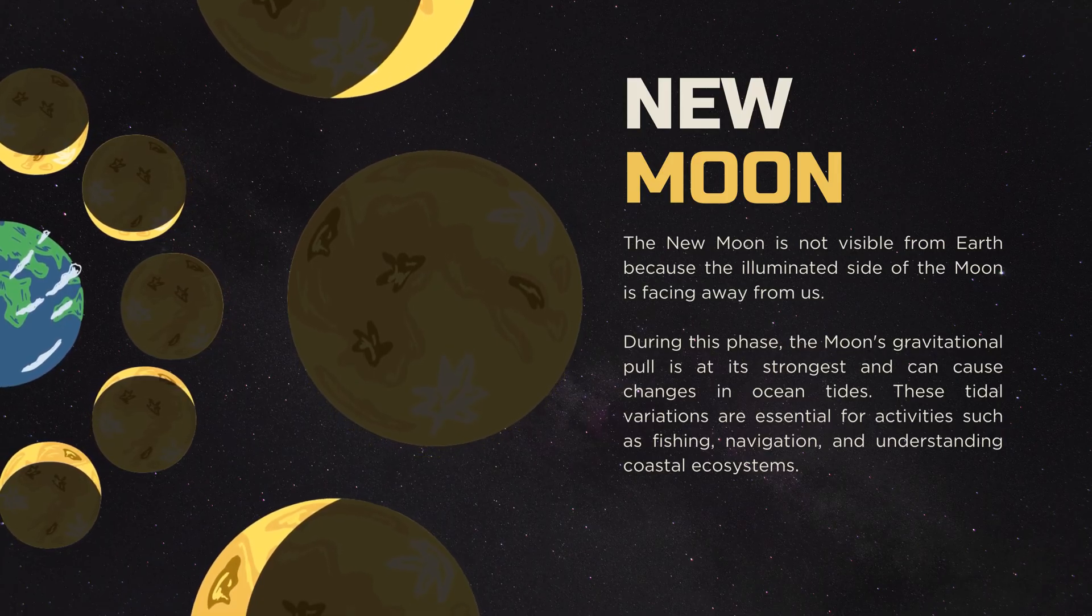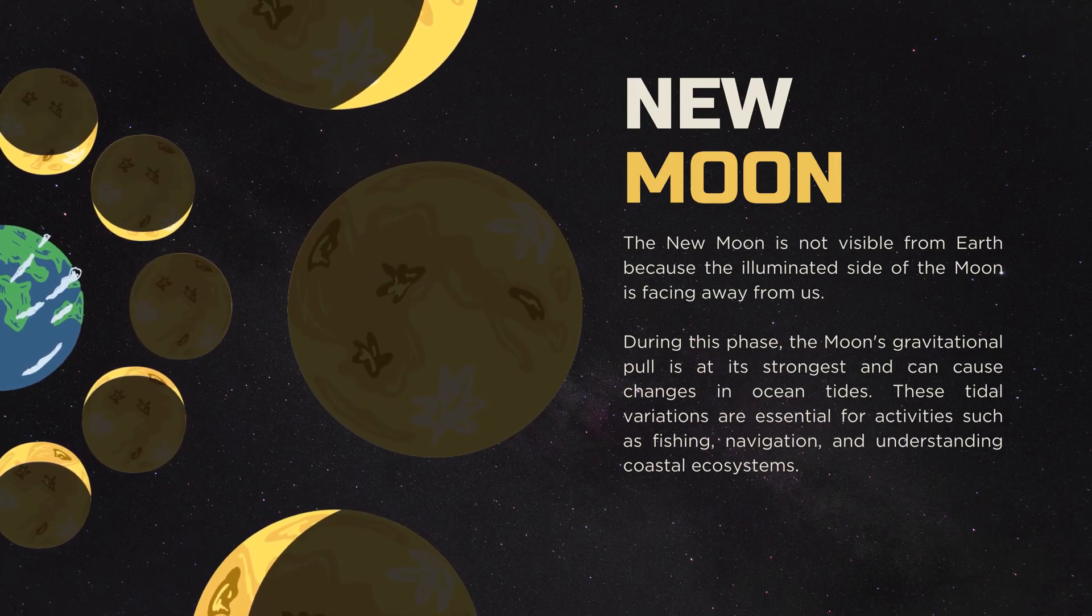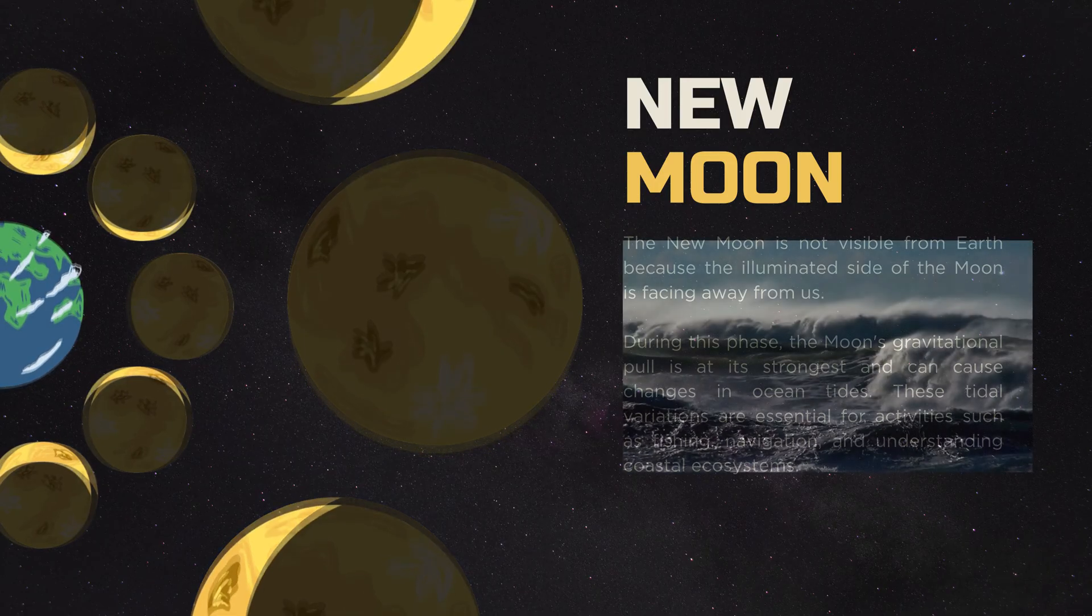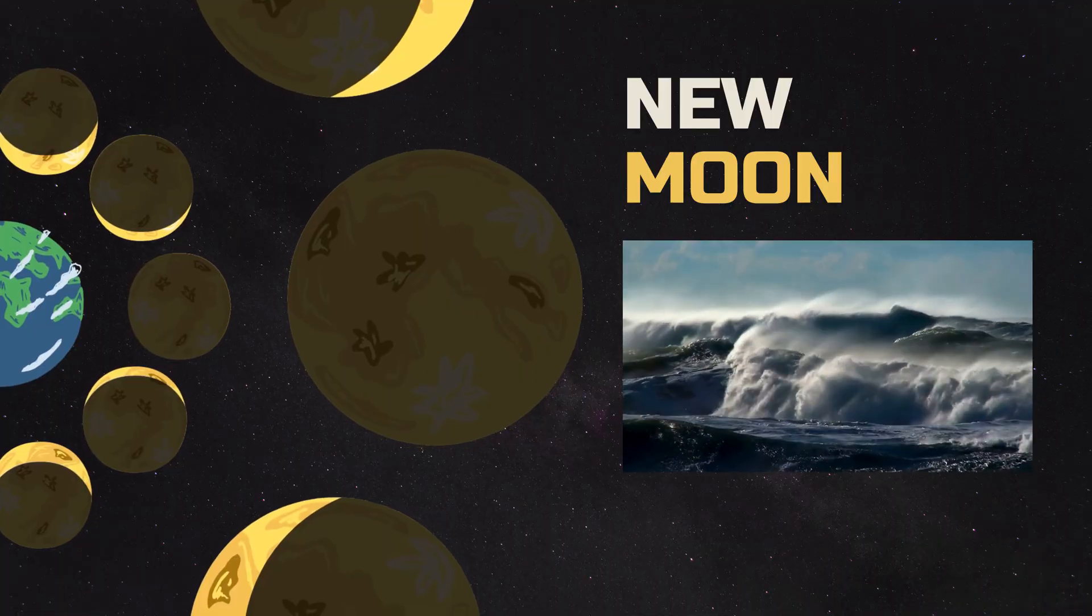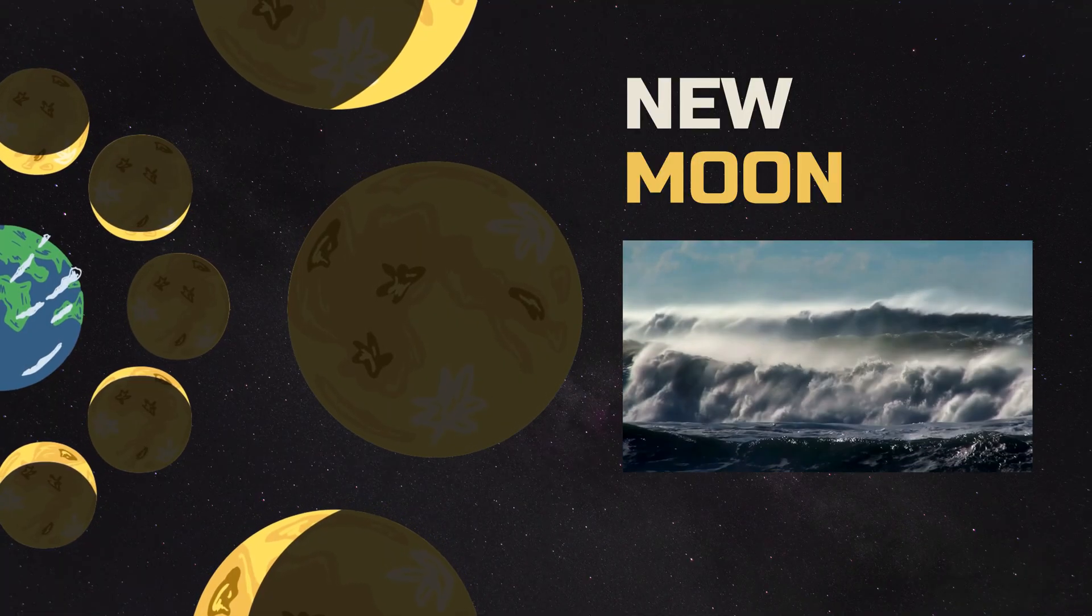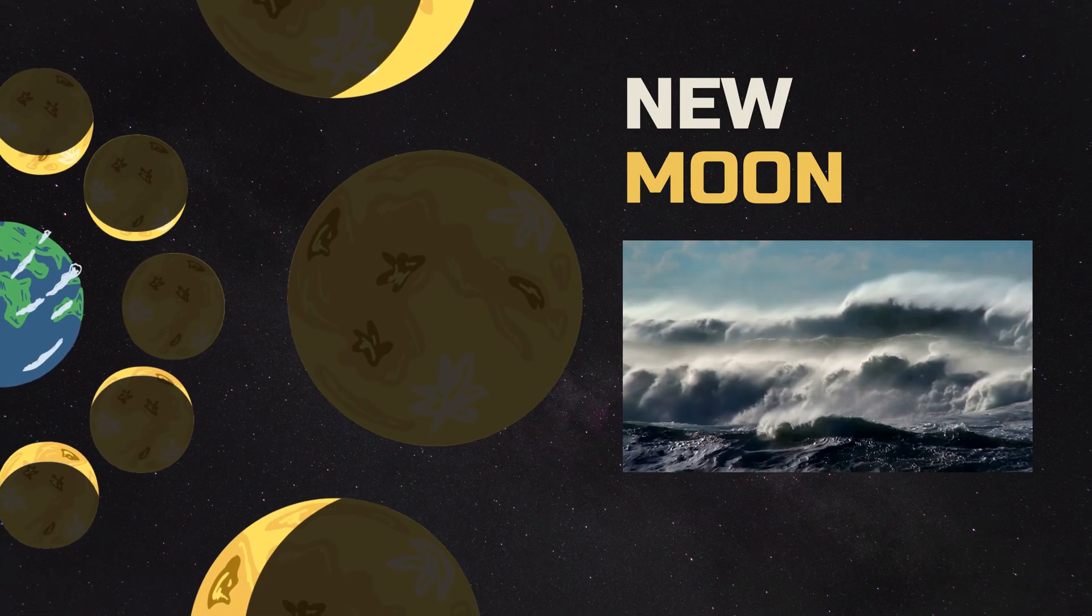During this phase, the Moon's gravitational pull is at its strongest and can cause changes in ocean tides. These tidal variations are essential for activities such as fishing, navigation, and understanding coastal ecosystems.